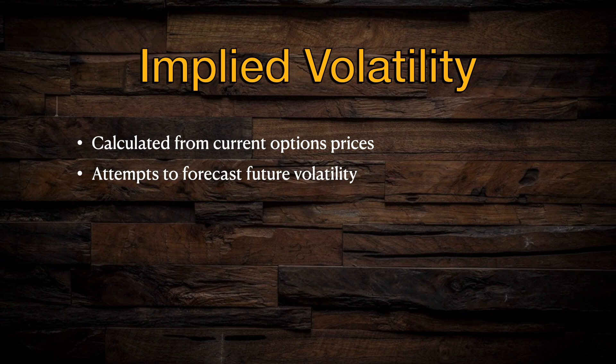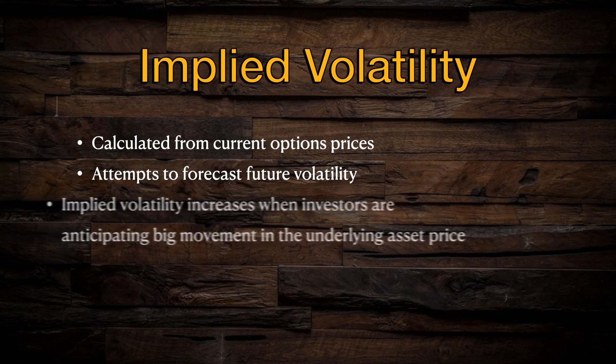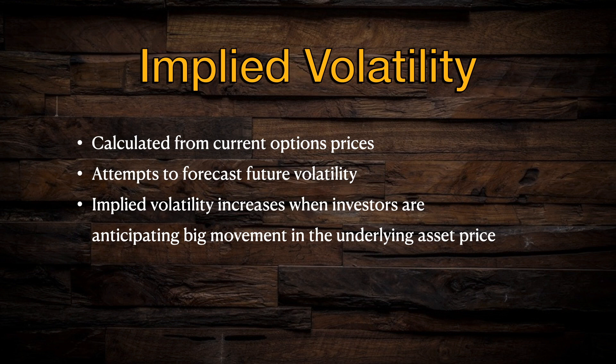Just like stocks, options are priced using the bid-ask system, which is essentially a democratic system in which buyers and sellers negotiate the fair value of an option in real time. If you need a refresher on how this system works, check out my video on the bid-ask spread. Implied volatility for a future time period is calculated using the at-the-money options that expire at the end of that time period. Basically, this means that if traders expect the stock to make a big move in the future because of a high volatility event like an earnings report or new product announcement, then they will likely start charging higher premiums for the options they are selling around that date or event.